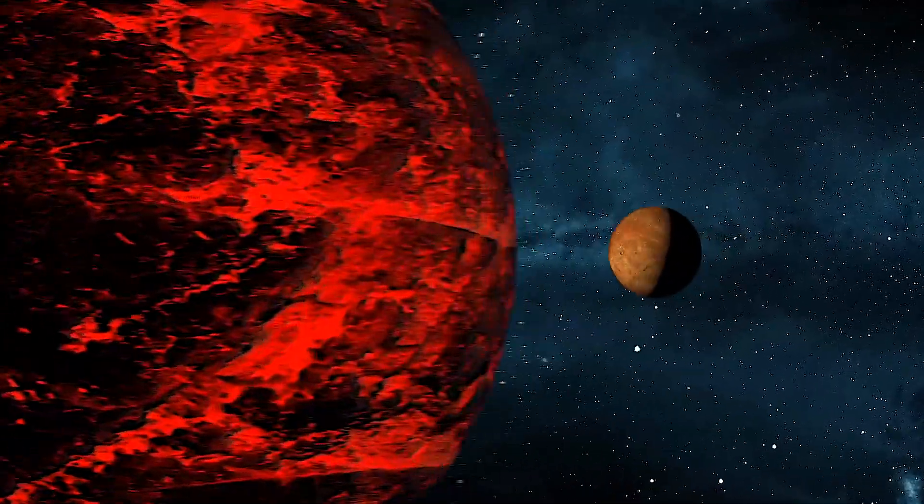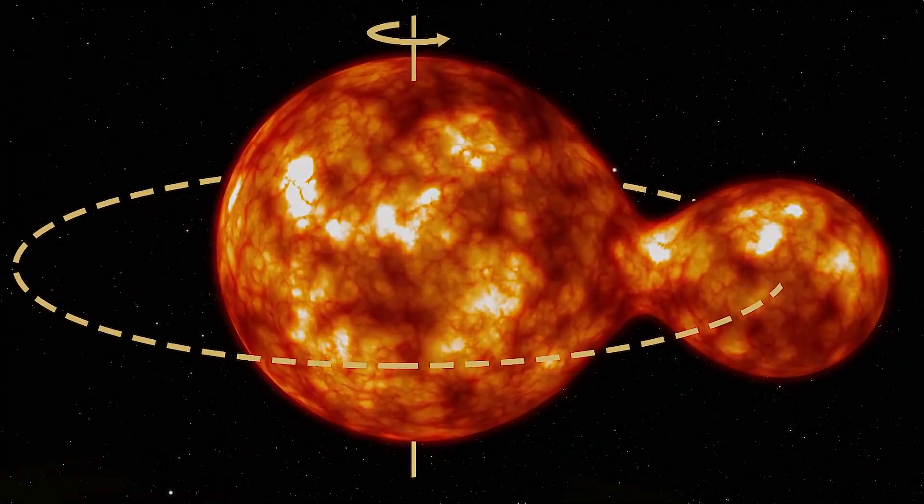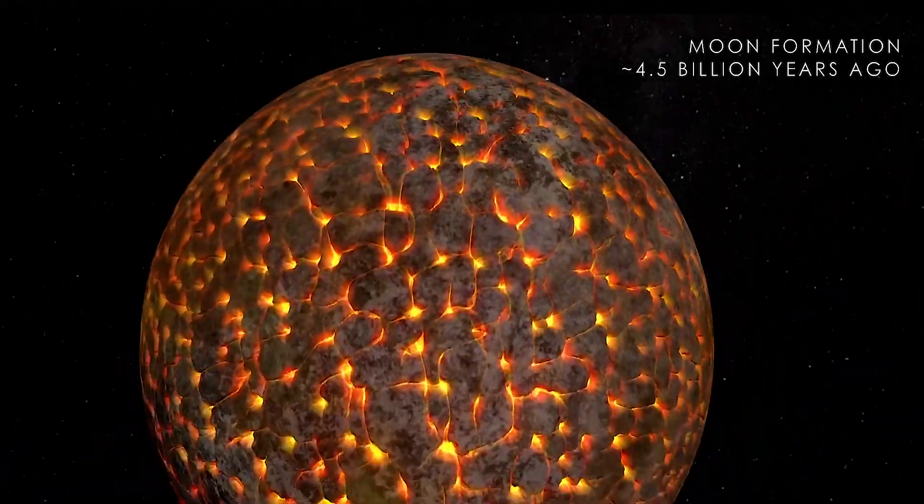Another version was fission, where the earth was spinning so fast that it would have lorped out of the earth and then formed its own body.